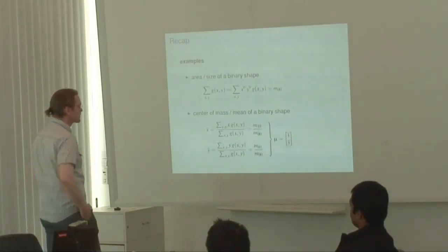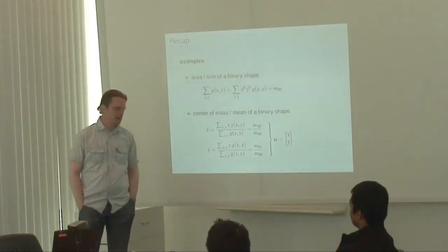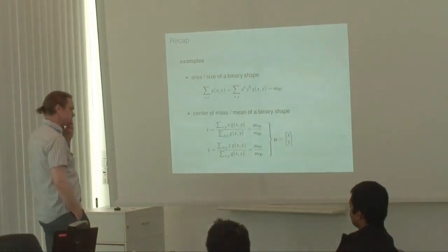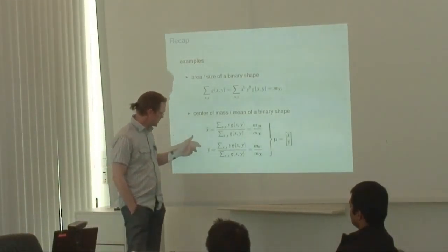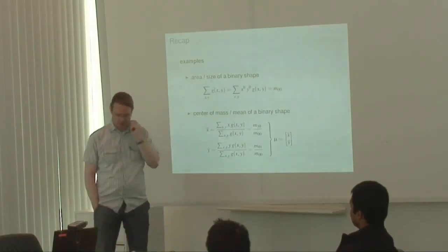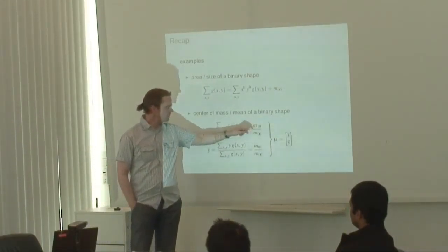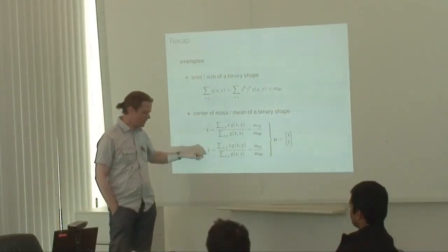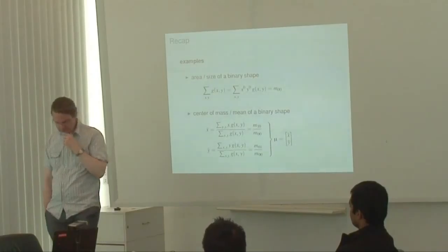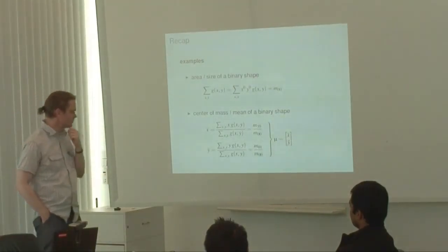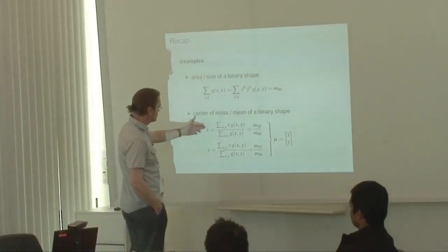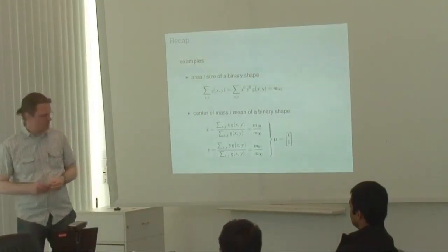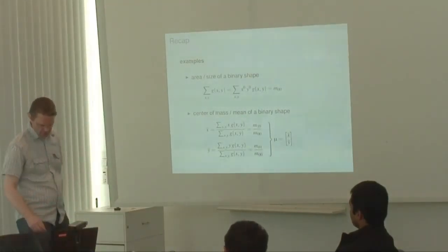We also looked at the center of mass, or mean pixel, of a binary shape. The x-coordinate x-bar of the mean pixel is expressed as M₁₀ over M₀₀, and the y-coordinate y-bar is expressed as M₀₁ over M₀₀. These two coordinates together form the mean vector of that set of points.